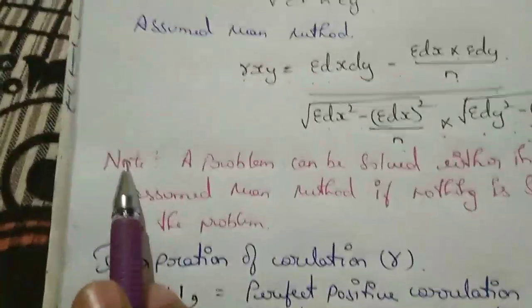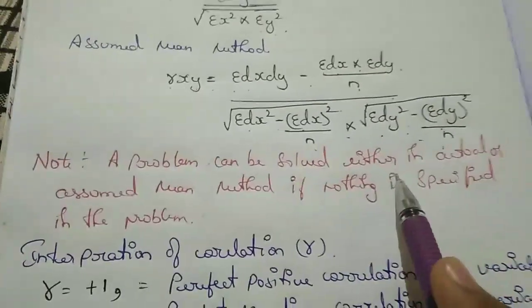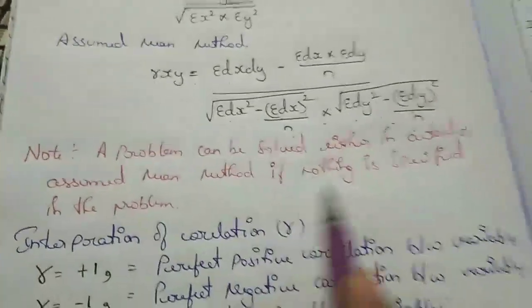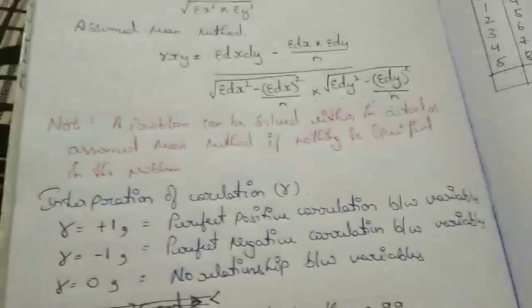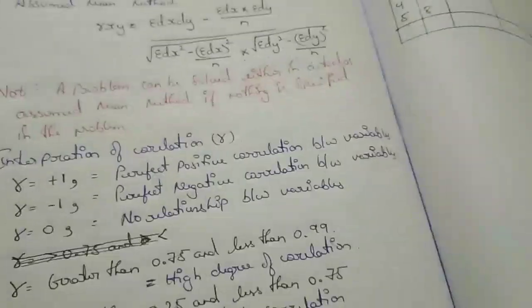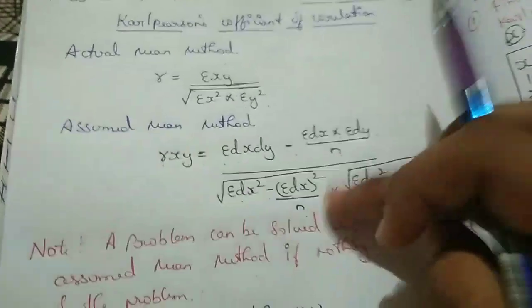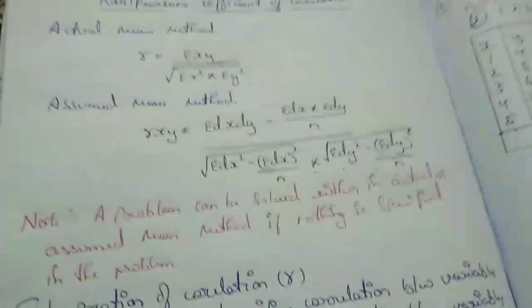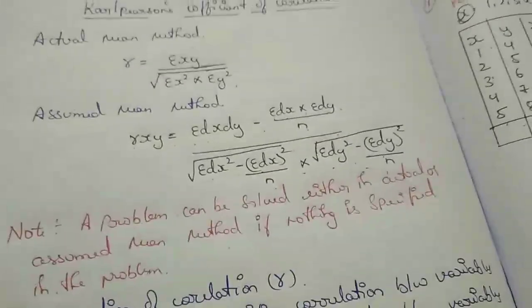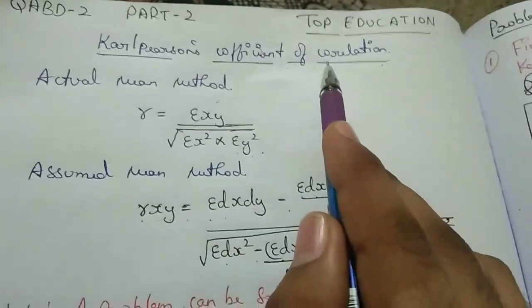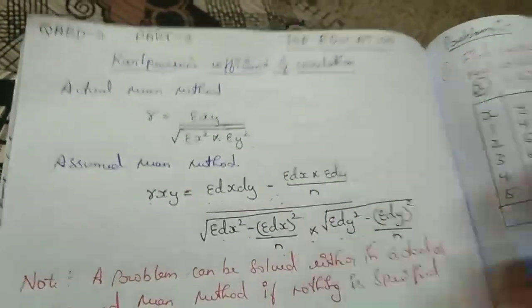Note: a problem can be solved either by the actual mean method or the assumed mean method. If nothing is specified in the problem, whether in a 6-mark or 14-mark question, you can choose whichever method you know. You can also do both, but the answer you get will be the same. In Carl Pearson's coefficient of correlation there are two formulas, but the answer will be the same.